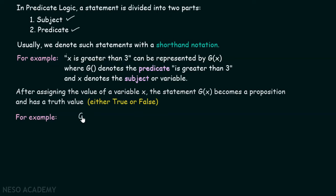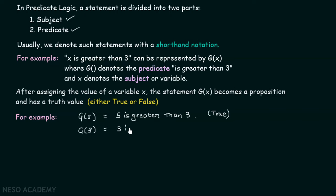Let's see certain examples of how to assign a value to variable x. Consider g(5). g(5) basically represents that 5 is greater than 3. Here x is replaced by 5. And 5 is greater than 3 is true. Now, if we consider g(3) — what is the truth value of the statement? 3 is greater than 3. Is it true? No, it is not true. You can see that after assigning the value of x, we get the truth value of the statement — either true or false. It depends upon the value of x. This is it for now; we will deal with more such examples in the next lecture.